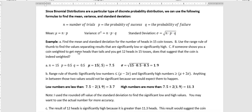So here's an example. Find the mean and standard deviation for the number of heads in 15 coin tosses. Then use the range rule of thumb to find the values separating results that are significantly low or significantly high. And if someone shows you a coin weighted to get more heads than tails, and you get 12 heads in 15 tosses, does that suggest that the coin is indeed weighted.